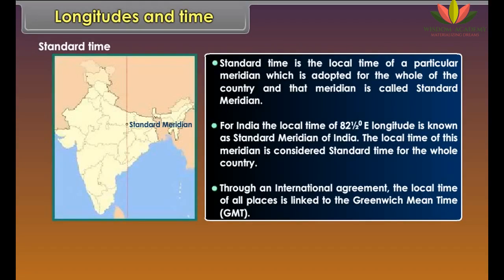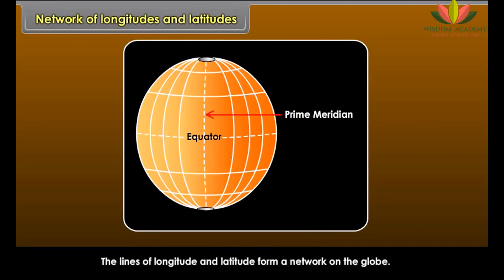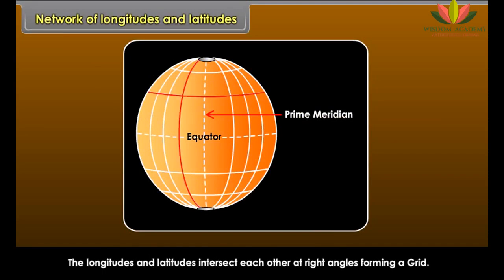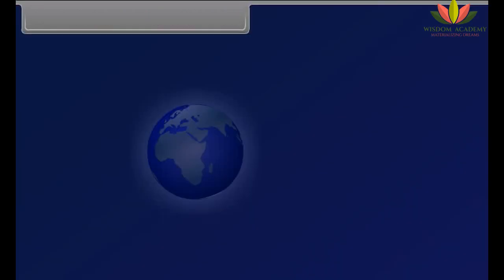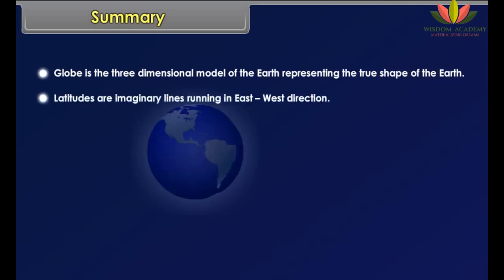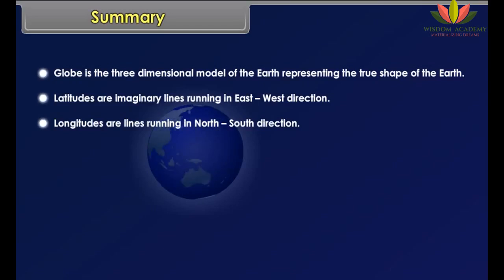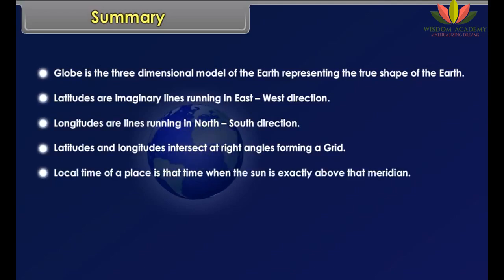Standard Time. Standard time is the local time of a particular meridian which is adopted for the whole of the country, and that meridian is called the standard meridian. For India, the local time of 82 and a half degrees east longitude is known as the standard meridian of India. The local time of this meridian is considered standard time for the whole country. Through an international agreement, the local time of all places is linked to the Greenwich Mean Time (GMT). The lines of longitude and latitude form a network on the globe, intersecting each other at right angles forming a grid, which is helpful in locating different places on the map or globe.